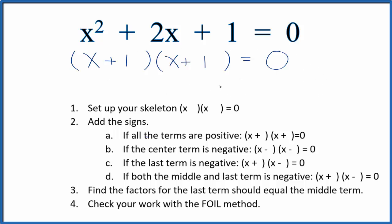This should be the correct factoring of x squared plus 2x plus 1 equals 0, but we can check our work with the FOIL method. We multiply the first terms, that gives us x squared, then the outside, x times 1 that's 1x.